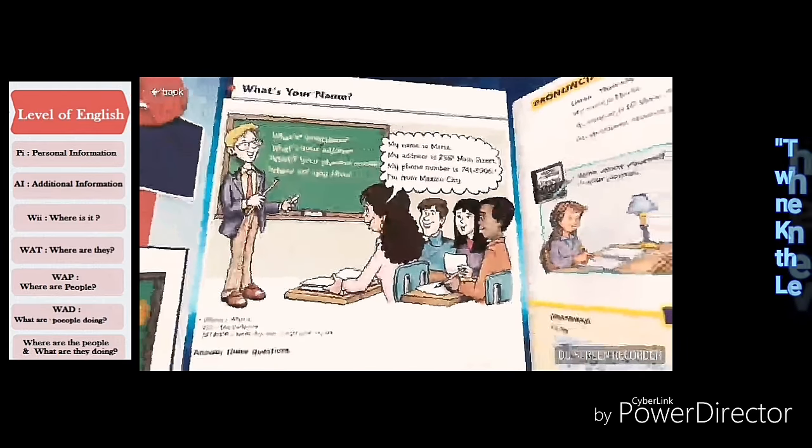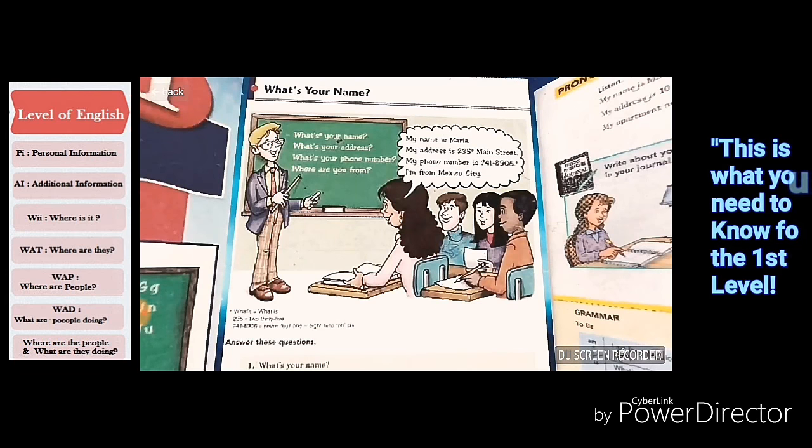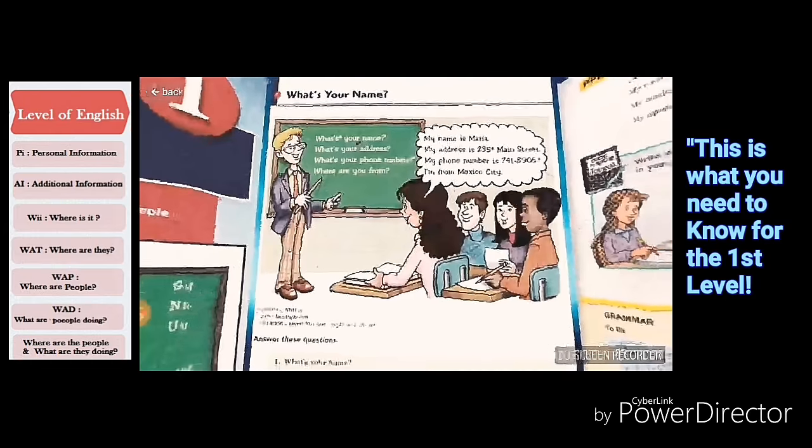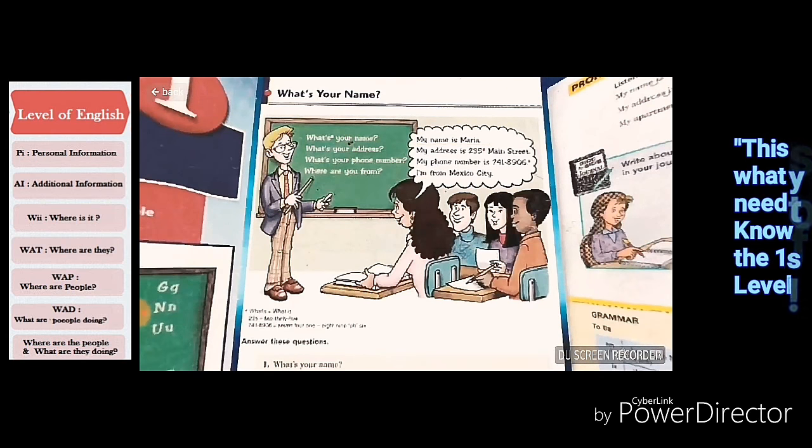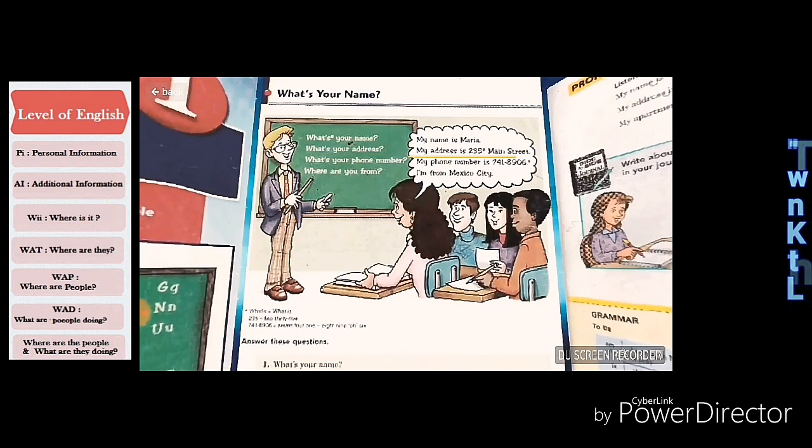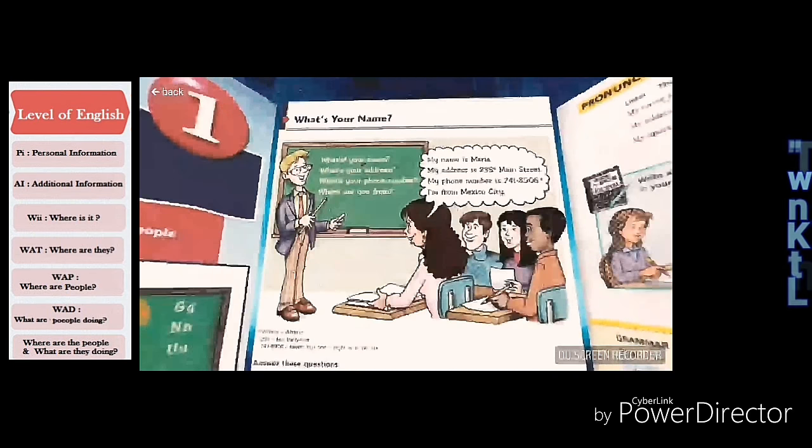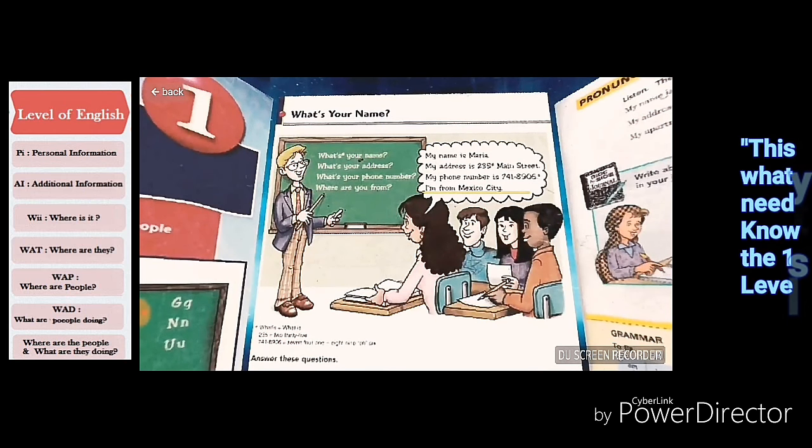Let's continue to the first section which is what's your name. Here we have an example of the conversation for the question and answer. The teacher is in front of the students and he's presenting personal information: name, address, telephone number, and from. Excuse me class, can you help me please? Please listen and no repeat. What's your name? My name is Maria. What's your address? My address is 235 Main Street. Where are you from? I'm from Mexico City.